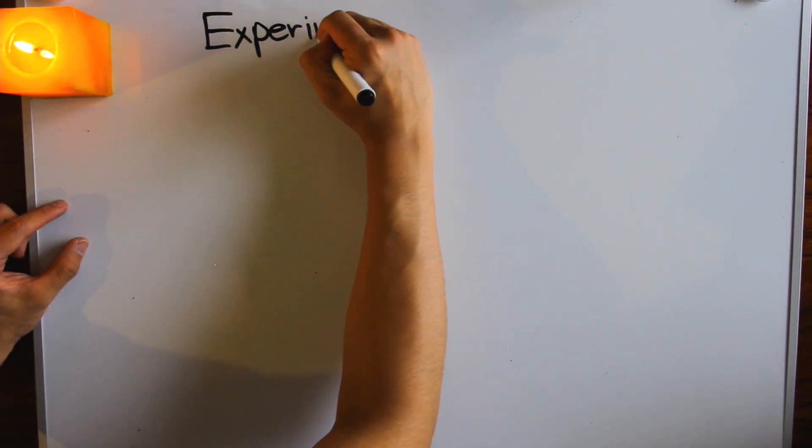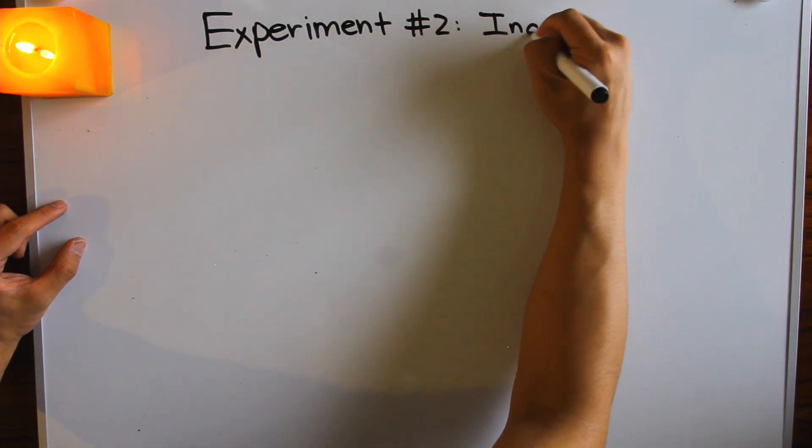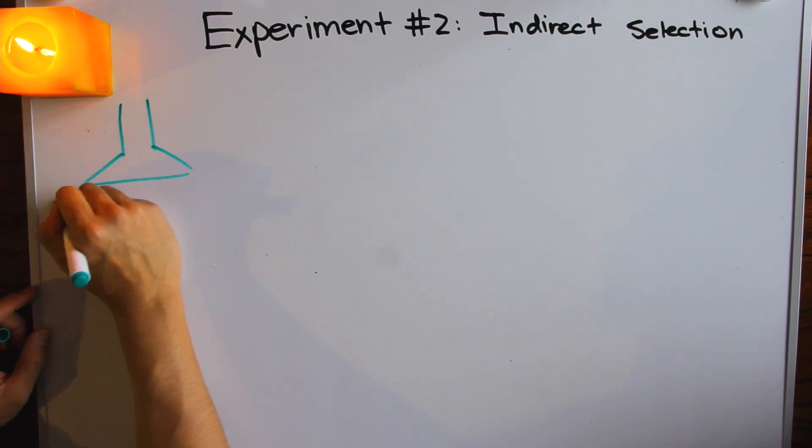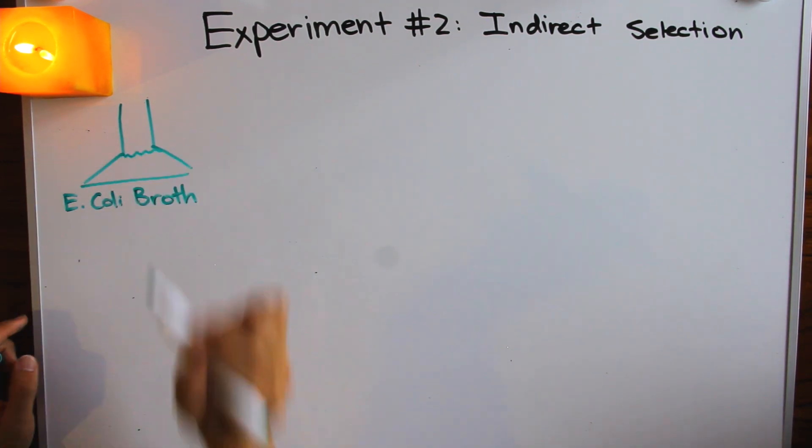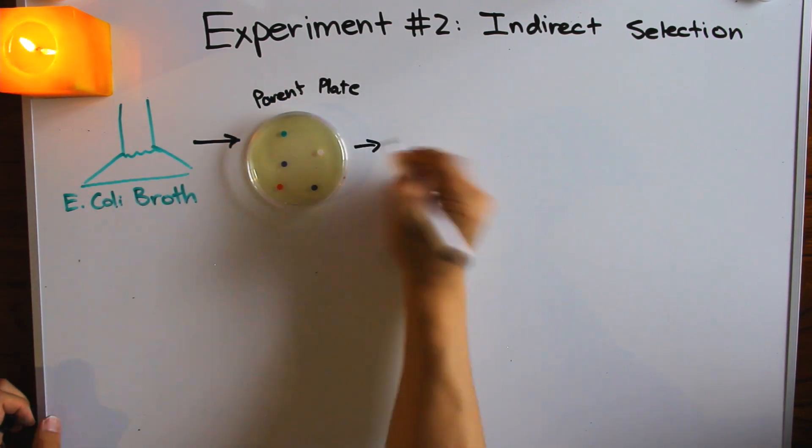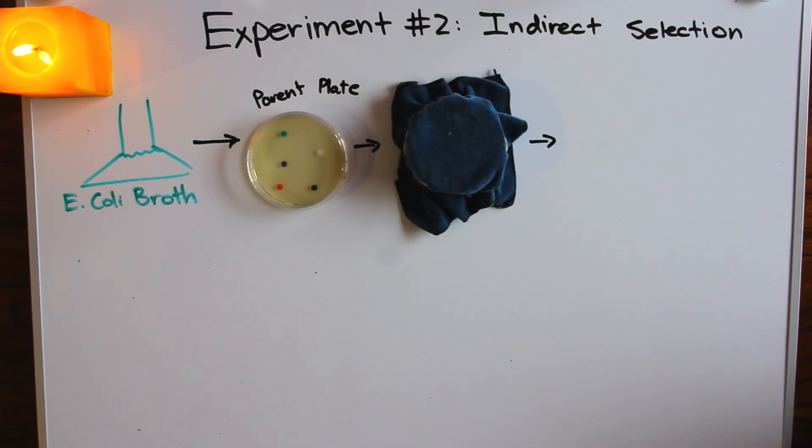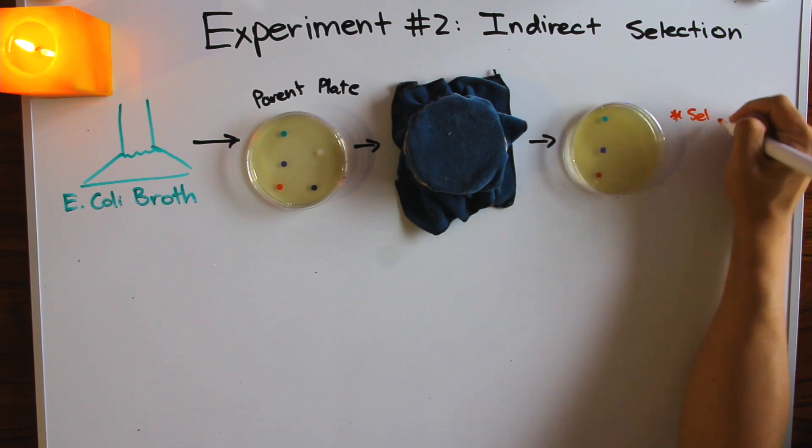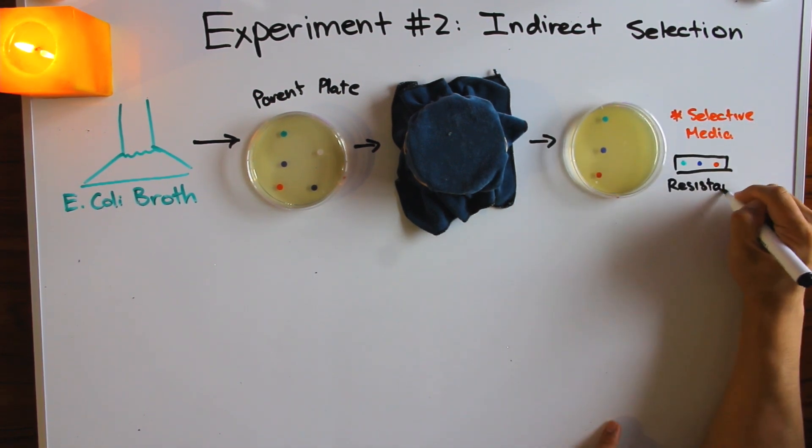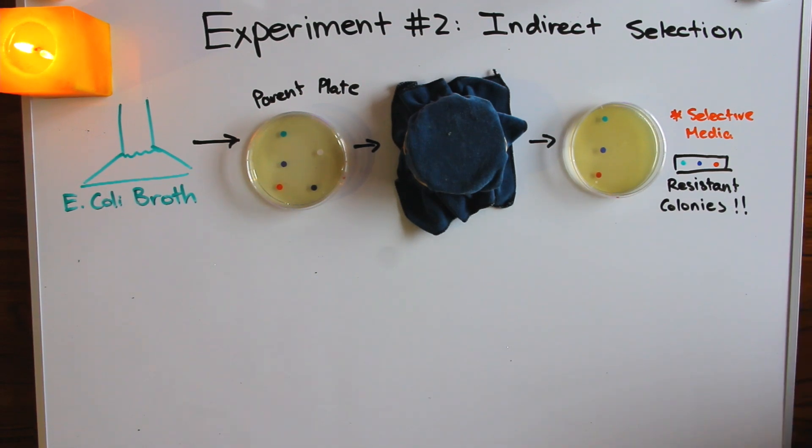But it gets even better, and this is the exciting part that you're probably going to be learning and doing in the lab. Velvet replica plating could do something that couldn't be done before: isolate the parent colonies. Why was this revolutionary? Well remember, the parent colonies haven't touched streptomycin or T1, so if we could select for resistance using the parents, then that would show that resistance existed from the start, and would be very strong evidence for pre-adaptation.